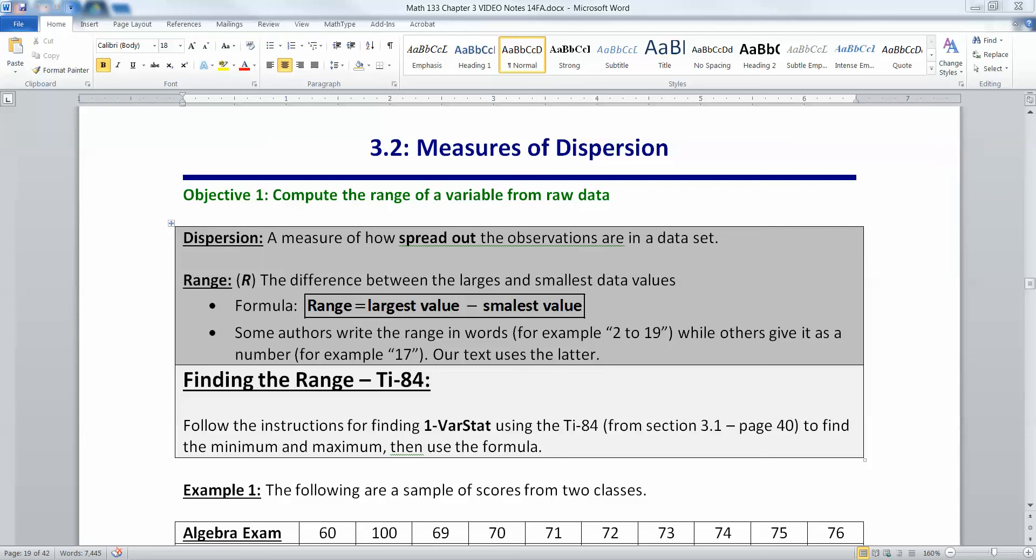When we have a set of data, one of the first things we want to look at is where is the center. Section 3.1 was all about where is the center of your data, the measure of central tendency. If you remember, we have the mean, the median, and the mode. The next thing you'll want to know is how spread out is that data set. Are things close to the center or far away from the center? What's your spread?